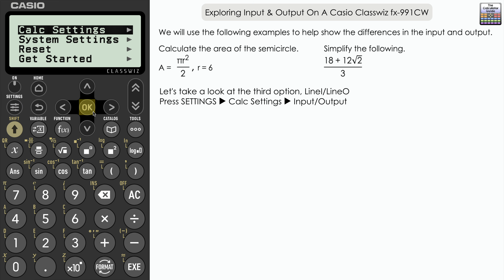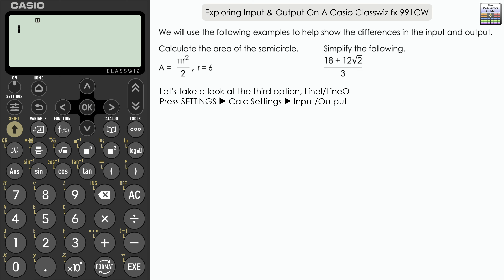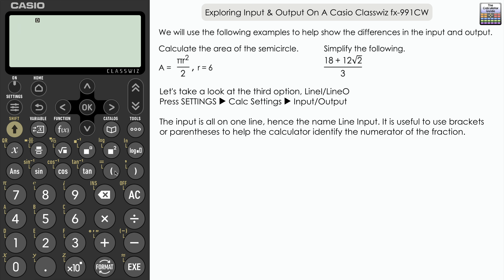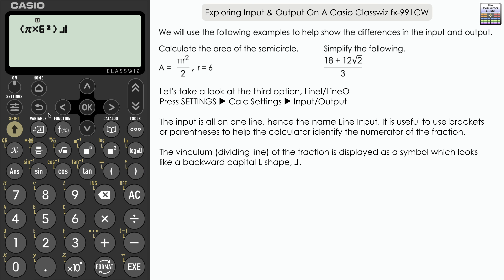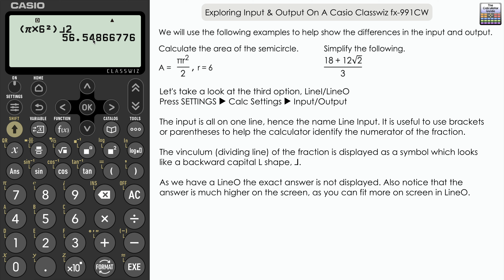Back to settings, calc settings, and input output. The third option is line input, line output. If inputting a fraction for the semicircular area, I recommend using brackets. In line input, the fraction button appears as a backwards capital L, representing the vinculum — the line separating numerator and denominator. All input is on one single line, hence 'line input'. Input brackets around pi times 6 squared, close brackets, fraction button over 2, press execute. With line output, answers that could be exact in math output will only display as a decimal — 56.54. Even selecting standard still gives the decimal, because it's only a linear output.